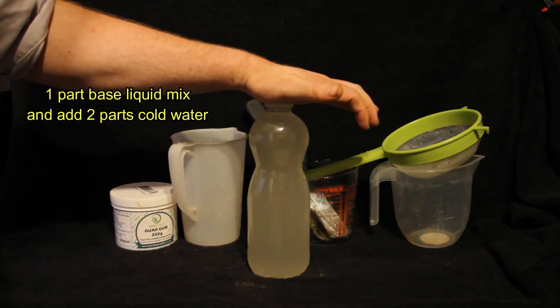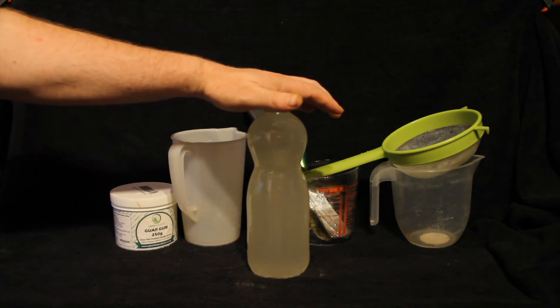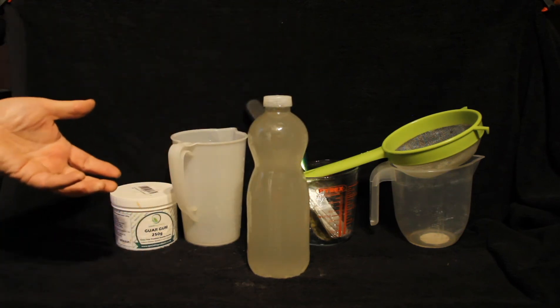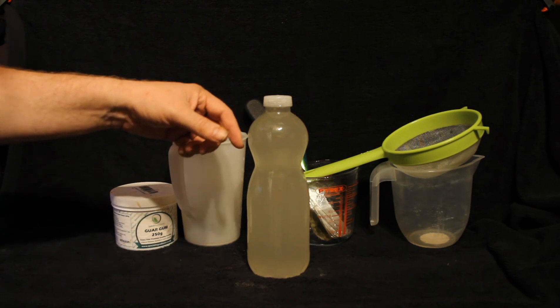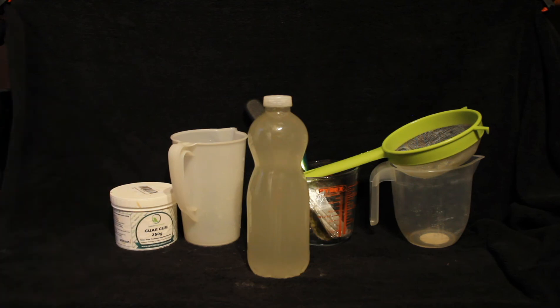This is the base of the liquid. I'll use one part of this to two parts cold water, and then just a little bit of mixing and trial and error. Either add a bit more of this or a bit more water to the mix to get the consistency I want, so I'll get the nice stringy beads on it.